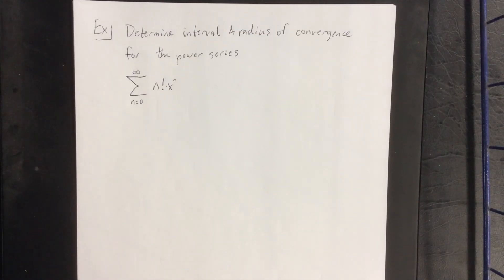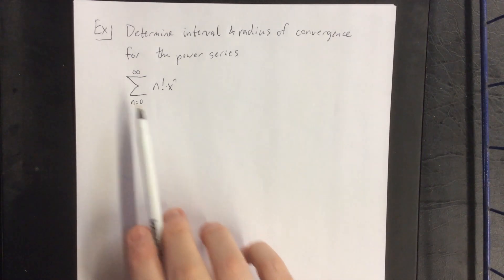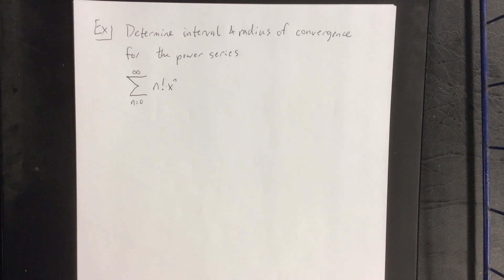For an example of determining the radius and interval of convergence for a power series, consider the following series: the sum from n equals 0 to infinity of n factorial divided by x to the n.